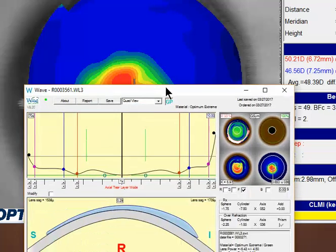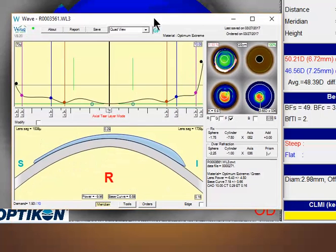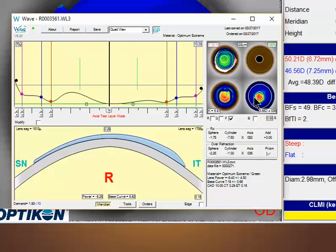But secondly, as you know from the power that's required for this particular lens, the inferior part of this lens is much, much thicker than the superior part. So no matter what you do, this lens is going to have a tendency to drop.